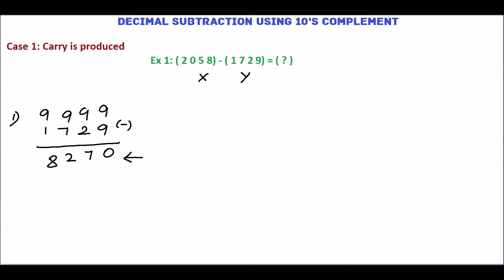This is the 9's complement. Add 1 with this to get the 10's complement. 0 plus 1 is 1. 7, 2, 8. The 10's complement is 8271.